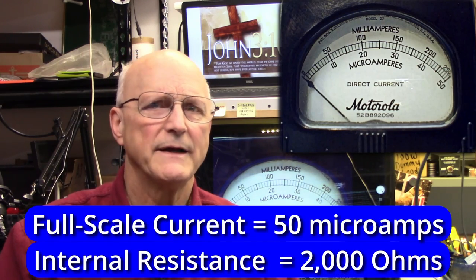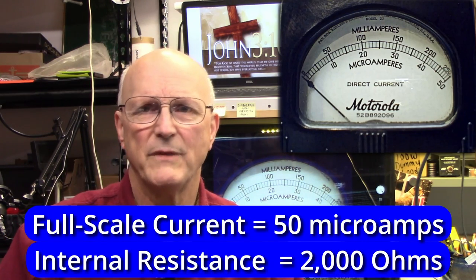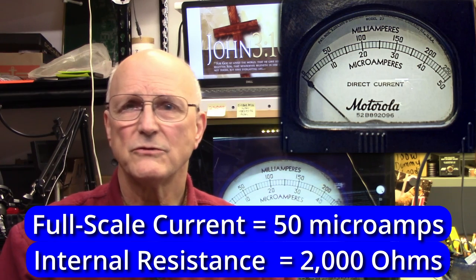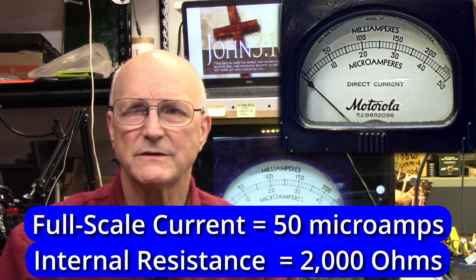Now I've already characterized the meter that I'm going to be using for this demonstration. I discovered that it is a 50 microamp meter which has an internal resistance of 2,000 ohms.